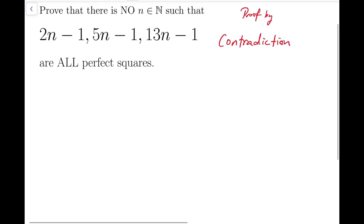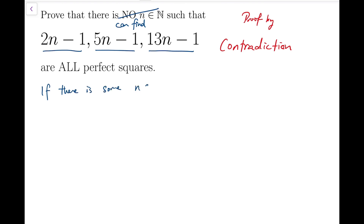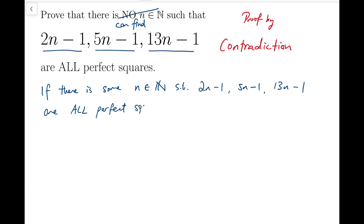So I'm going to start with assuming the opposite of the statement, which is that I can actually find a natural number n such that these three numbers are really all perfect squares at the same time. Now I'm going to see what would happen in that case. So if there is some natural number n such that these three numbers are all perfect squares,